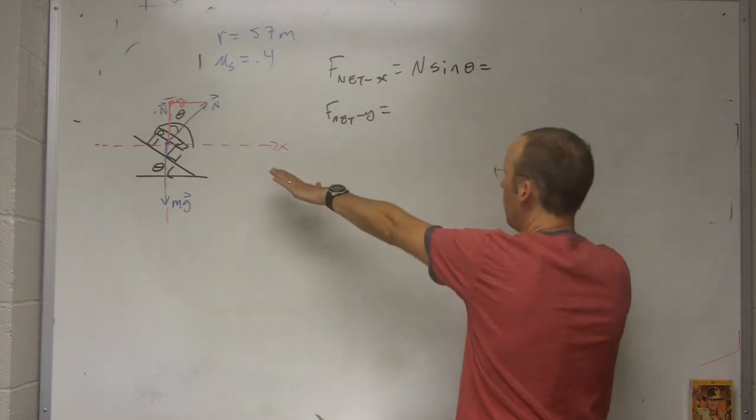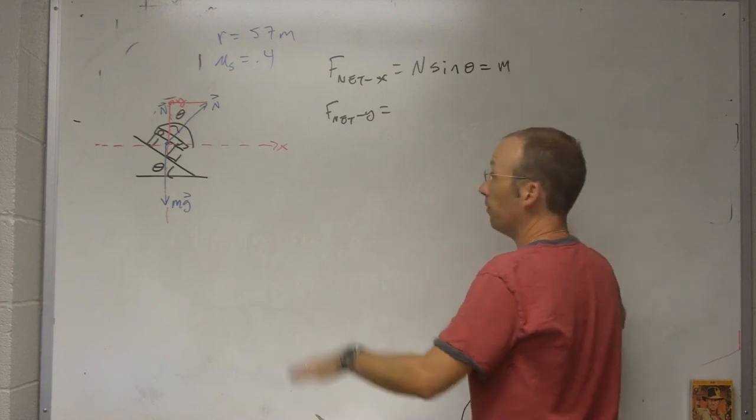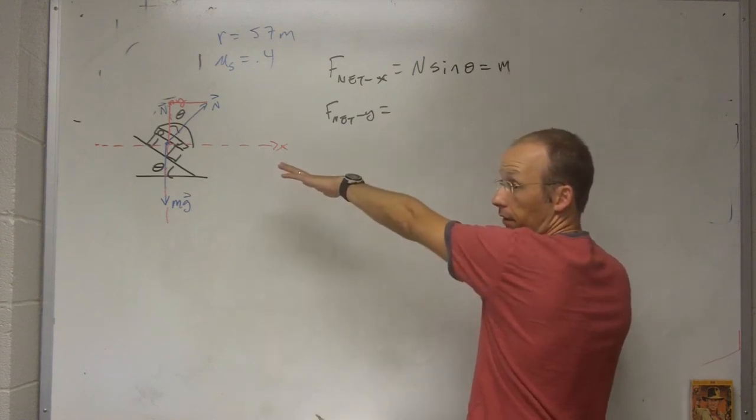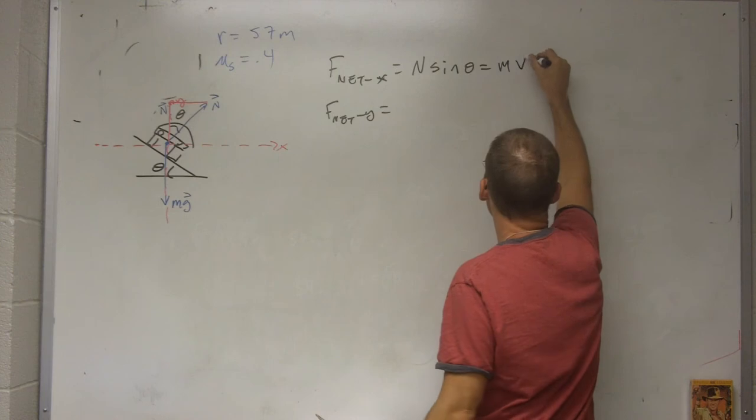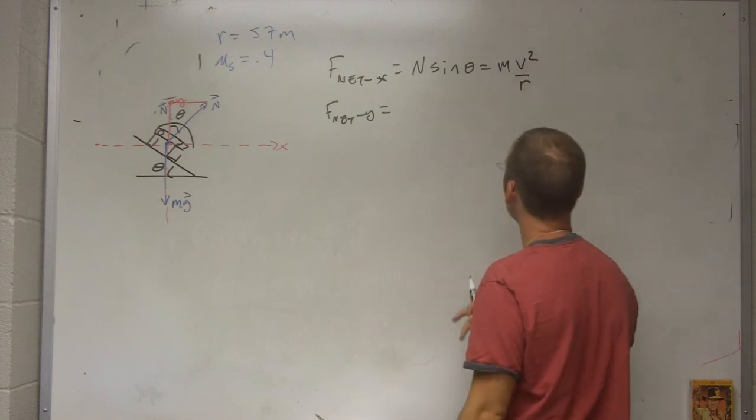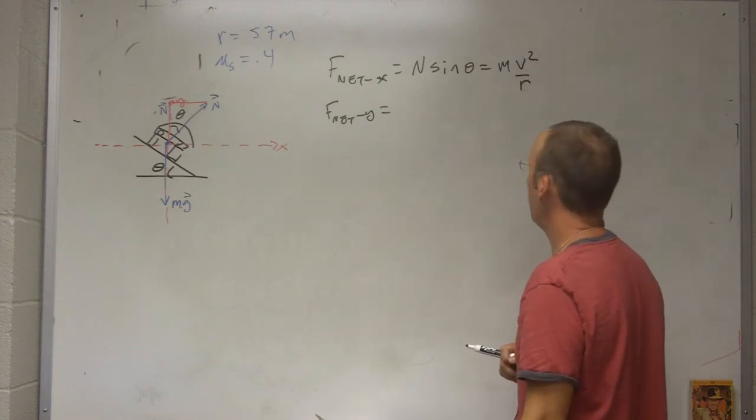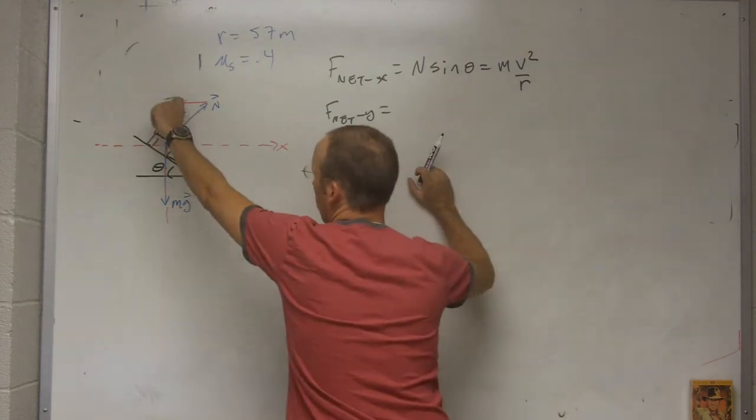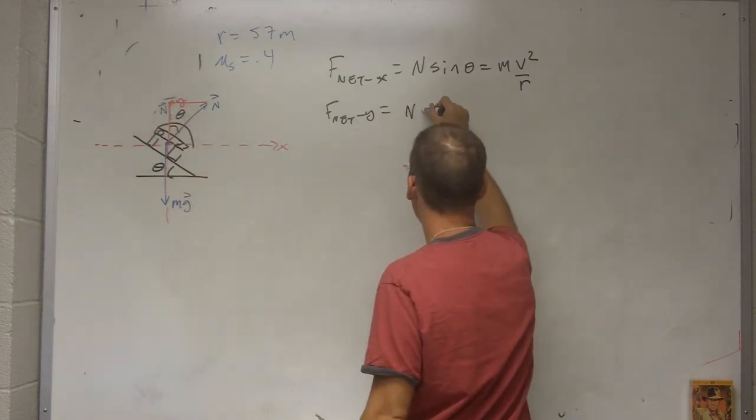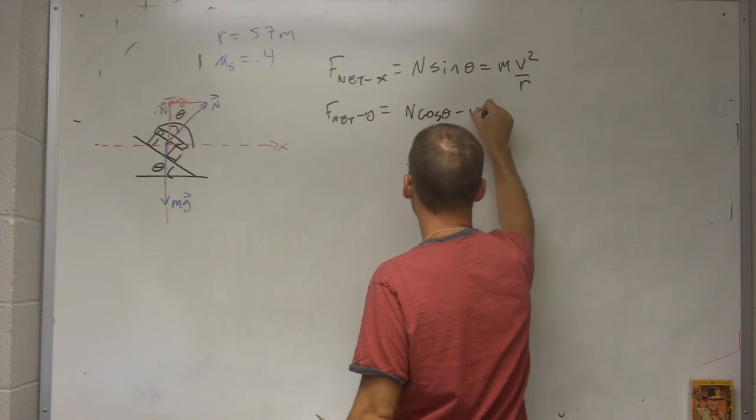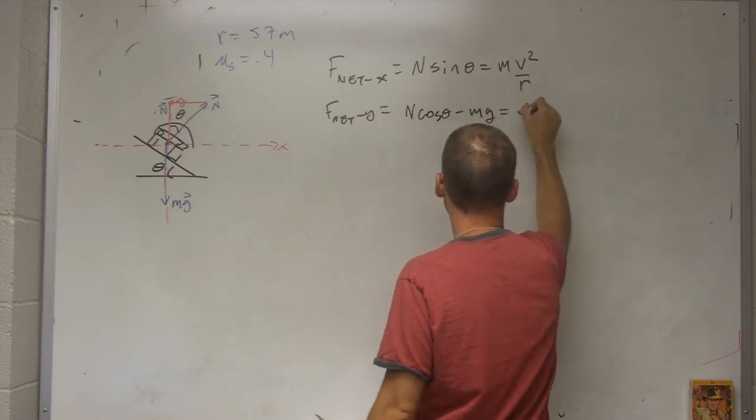And that's going to be equal to the mass times the acceleration of the car, which is going to be v squared over r. And in the y direction, I have this component of the normal force n cosine theta minus mg equals zero.